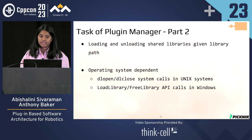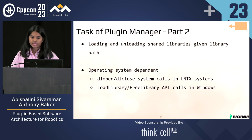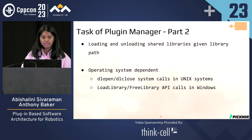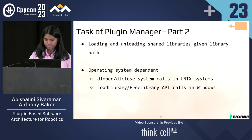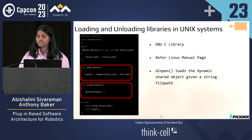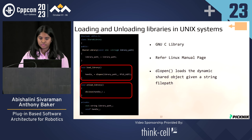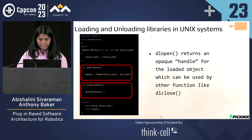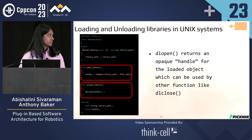Now that we have the library path, the next task is to load and unload these shared libraries, and again this is operating system dependent. On Unix systems we have the system calls dlopen and dlclose to do that. On Windows there are API calls LoadLibrary and FreeLibrary. dlopen loads the dynamic shared object given a string file path, and it returns an opaque handle for the loaded object which can be used by other functions like dlclose.